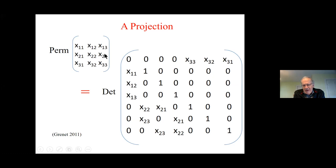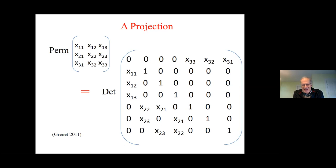If I want to compute a 100×100 permanent as a determinant, the size of that determinant would be something like 2^100 × 2^100. Even for a 3×3 permanent, the best known construction gives a 7×7 determinant — that's 2^3 − 1 by 2^3 − 1. This is the state of the art, and the construction grows exponentially.